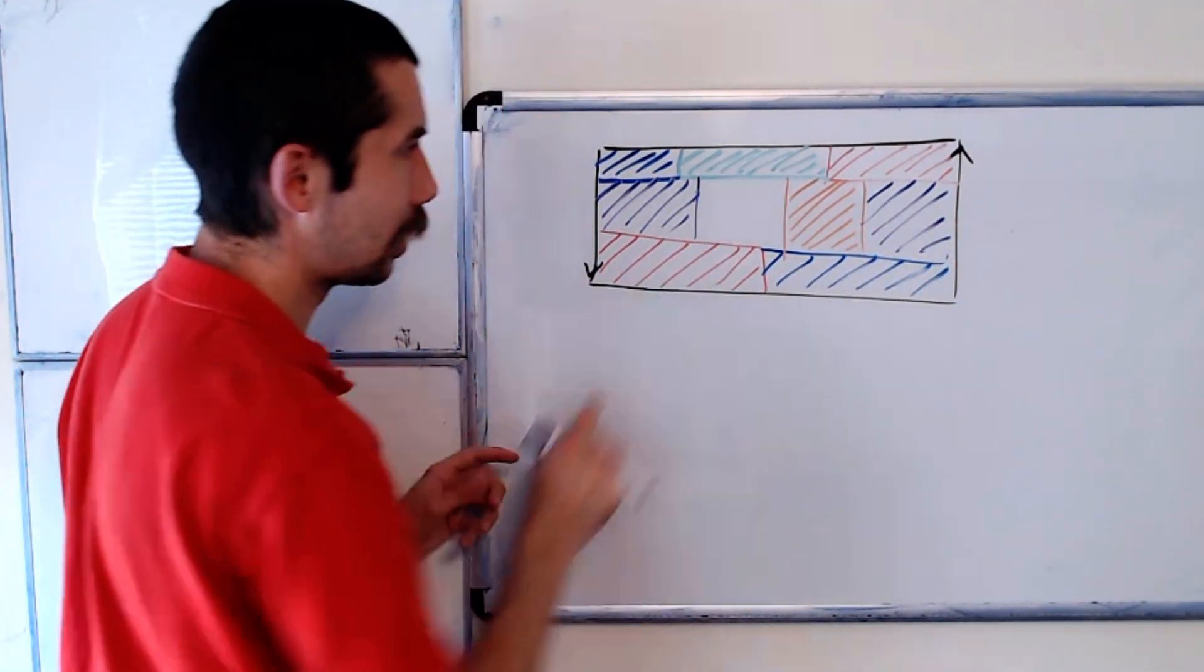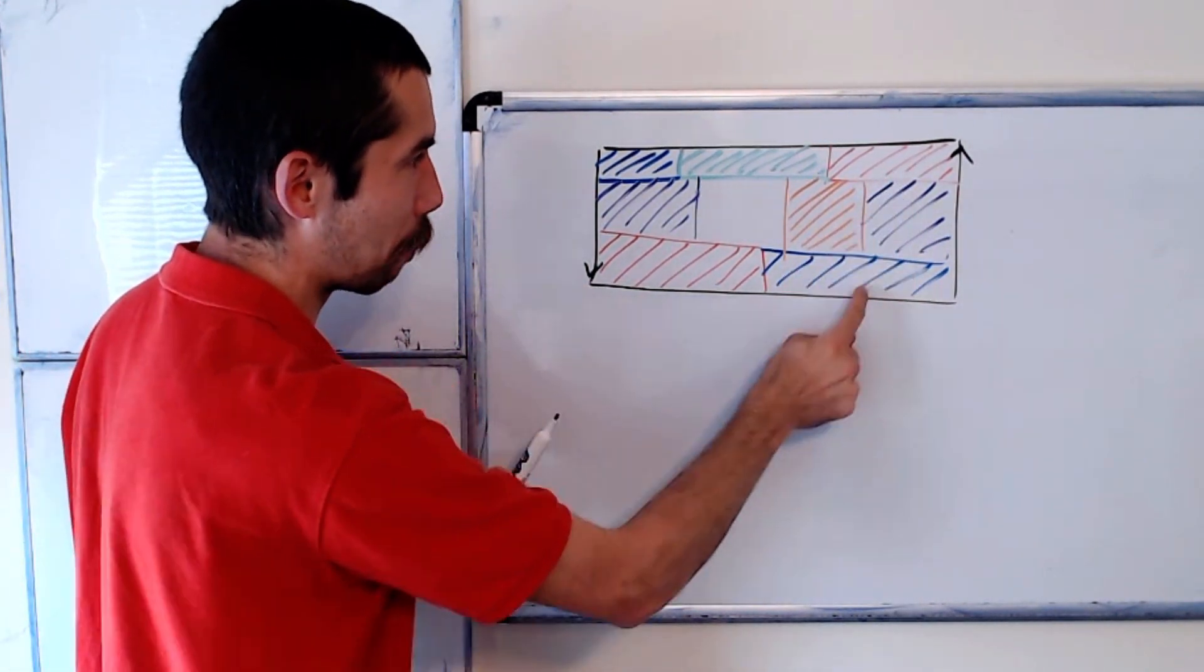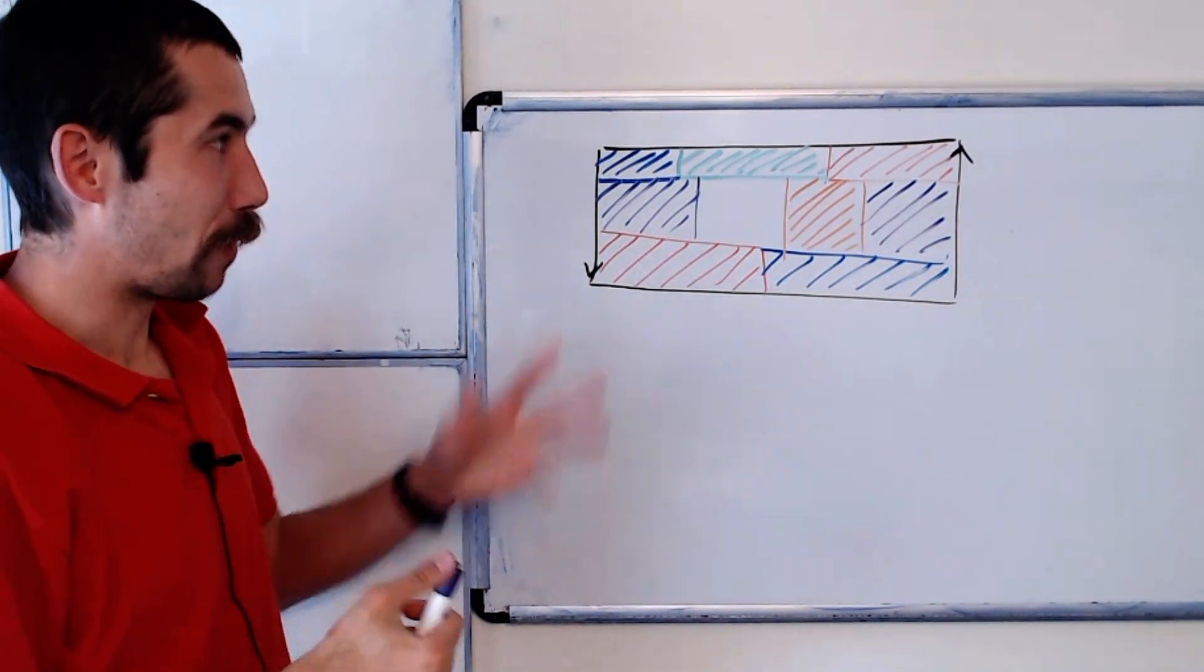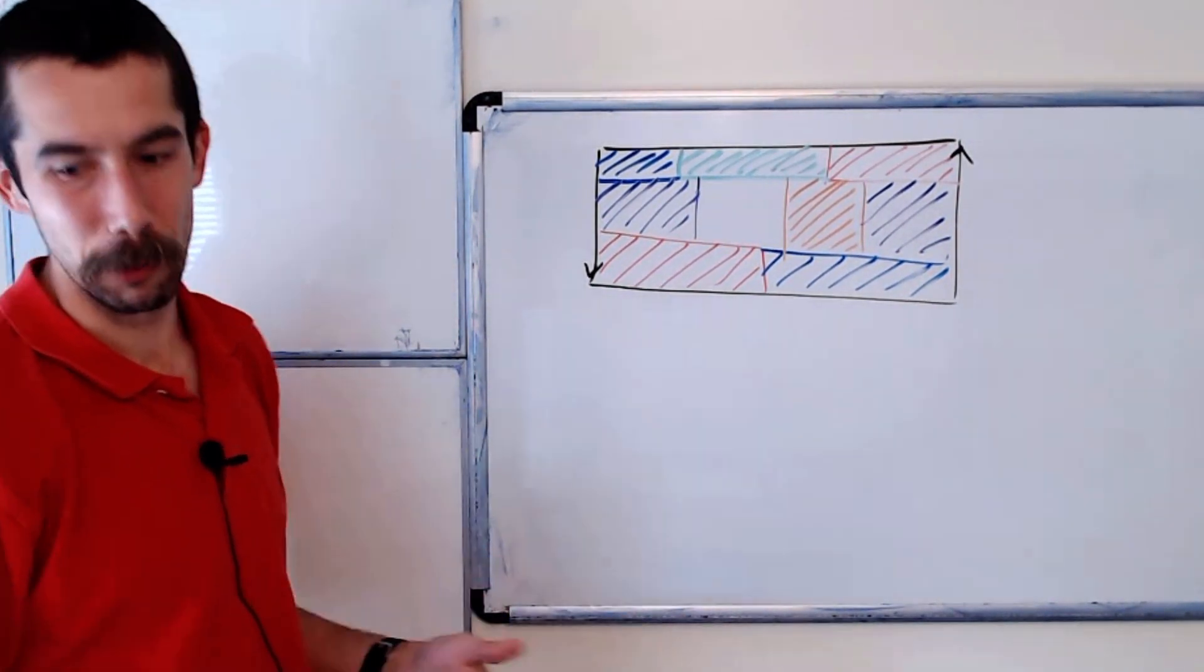And you can see purple is neighbors with orange, red, blue, and green. So here we have five regions that are all neighbors with each other. So we already broke the four-color theorem.